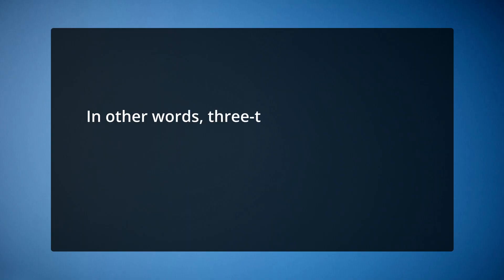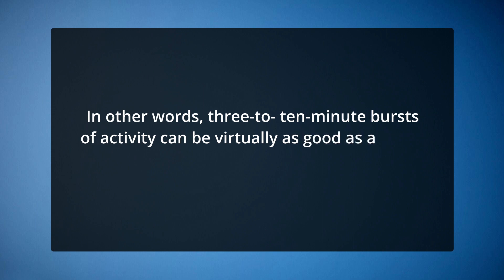Short bouts of exercise throughout the day have an additive benefit. In other words, 3 to 10-minute bursts of activity can be virtually as good as a single 30-minute exercise, so you can get significant health benefits without exercising for extended periods. An active person should allow for up to 60 minutes of exercise each day, accomplished by fitting in a few quick workouts throughout the day. Light to moderate activity as well as vigorous activity has been linked to a lower chance of developing coronary heart disease. Although vigorous exercise reduces all-cause mortality, the current focus is on increasing moderate activity.